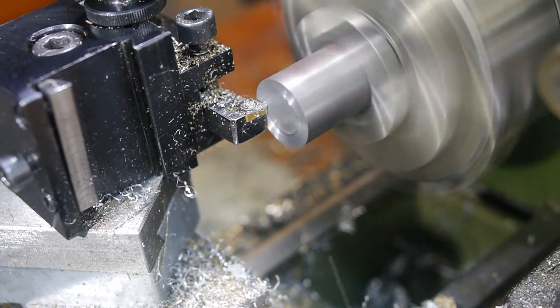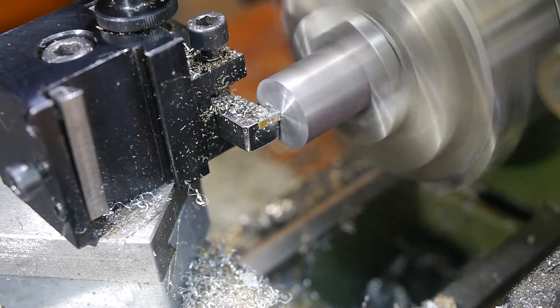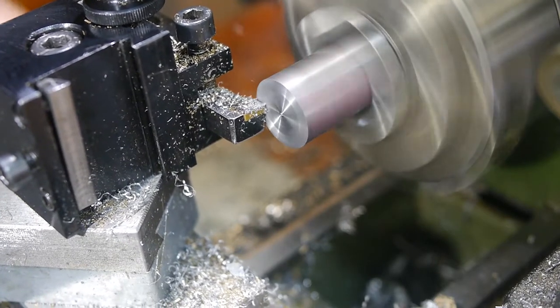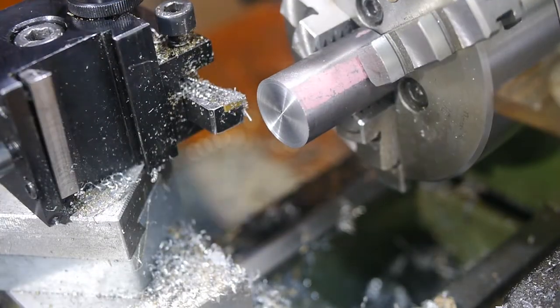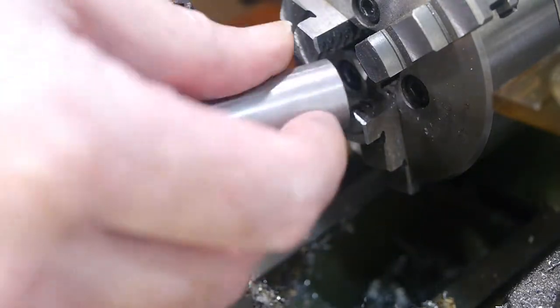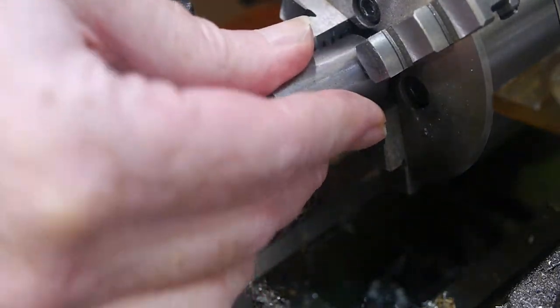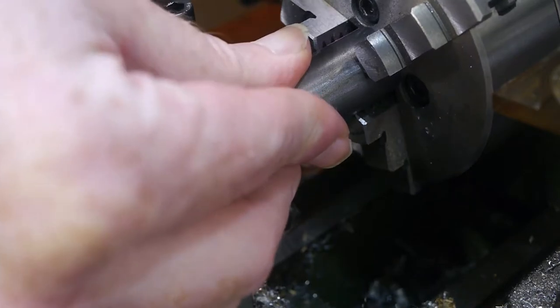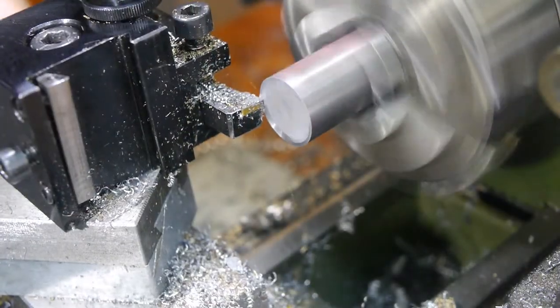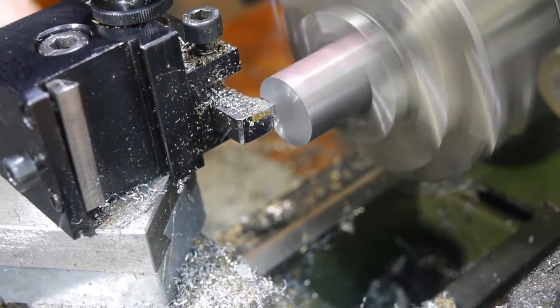The end pieces needed M10 threads to attach to the shaft and standard quarter-twenty camera tripod threads to attach to the clamp and Noga arm. The leaded mild steel was a real joy to machine, well worth using for simple projects like this where strength is uncritical. Sadly it's hard to get hold of, as the fumes are dangerous when it's welded or hot worked.